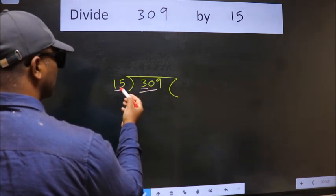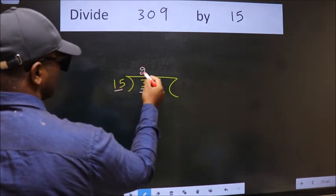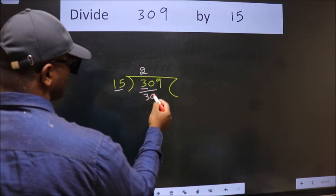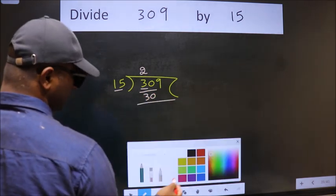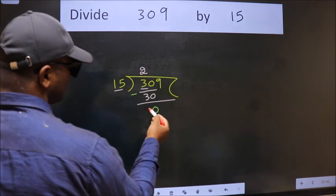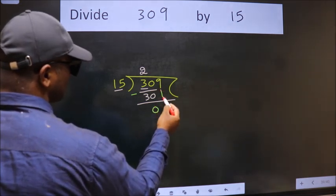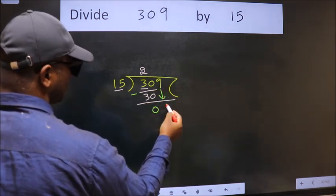When do we get in 15 table? 15 times 2 is 30. Now we should subtract. We get 0. After this, bring down the beside number. So 9 down.